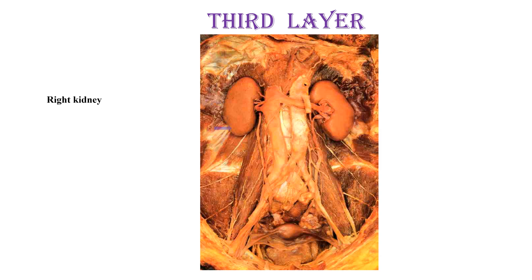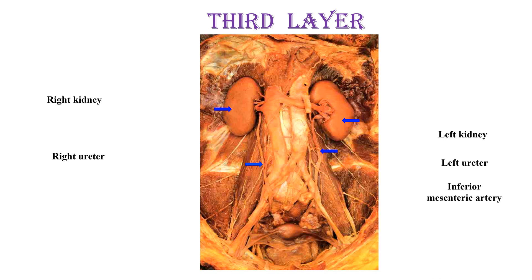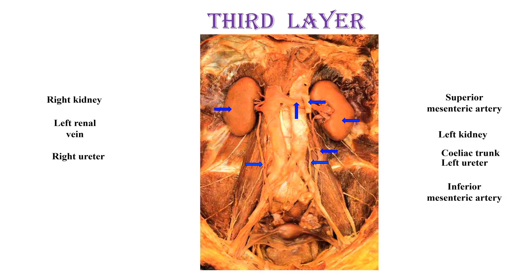What you can see here is the right kidney, the right ureter, the left kidney, and the left ureter. You can also see the inferior mesenteric artery, the superior mesenteric artery, and the left renal vein squeezed between the aorta and the superior mesenteric artery. The main components of the third layer are the two kidneys, their blood supply, and the ureters.